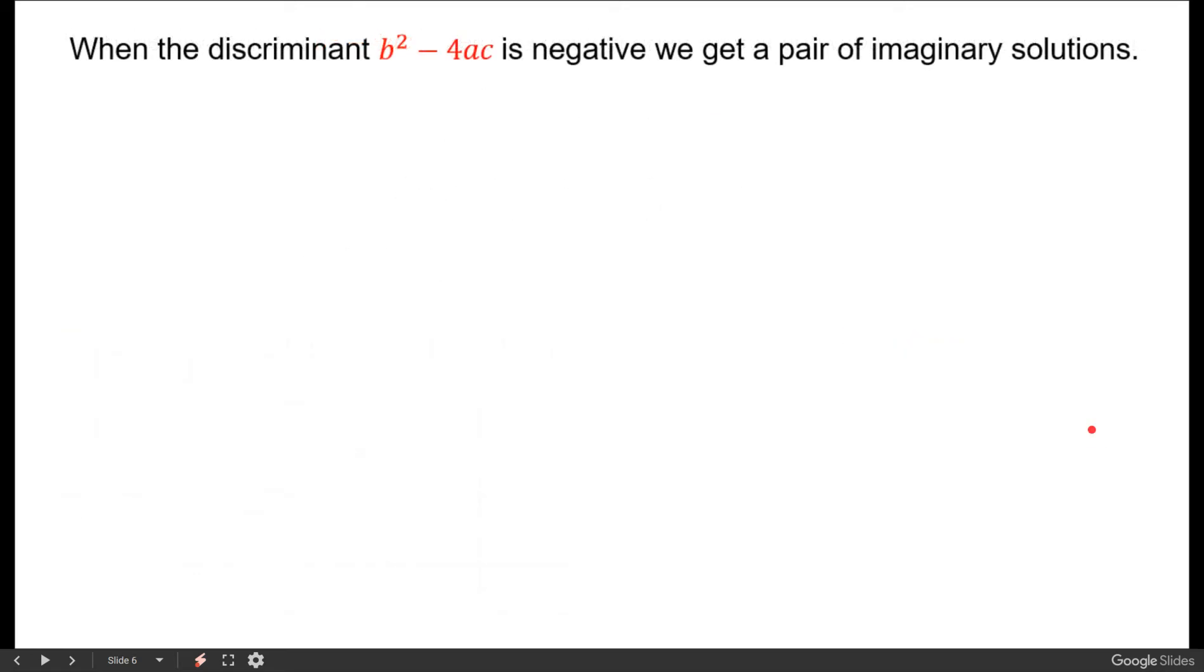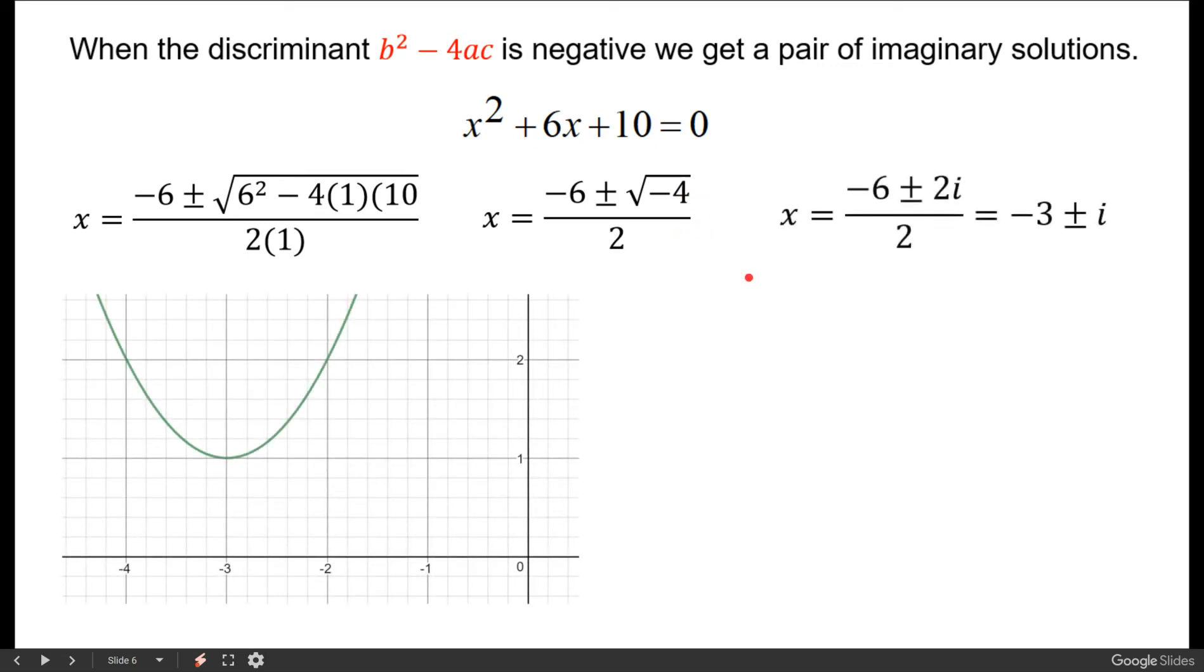Now the last scenario is the tricky one, that's where we get a discriminant that's negative. And if we wanted to factor this we wouldn't be able to so we would have to use the quadratic formula. And if you notice under the radical our discriminant is negative which means that we're going to get two imaginary solutions.